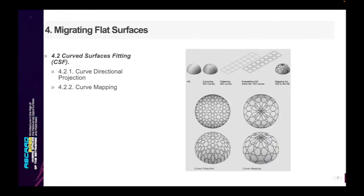Depending on the design problem, the curved projection method could be limiting. Consider the hemisphere shown in this slide, which shows an Islamic geometric design projected into a dome-like hosting surface. This figure clearly shows that the design is strongly distorted at the bottom boundary of the hosting surface. This limitation is addressed by the curve mapping method, which conducts significant changes to the x, y, and z coordinates of the design points and their respective curves — relocating points into positions relative to their original position in the two-dimensional design.